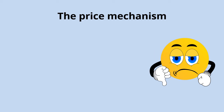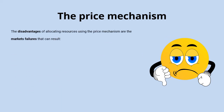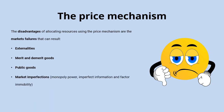There are a number of problems or disadvantages with allocating resources through the price mechanism. We've got externalities — external costs or benefits which can cause under- or over-production and consumption. We've got merit and demerit goods, consumed at too low or too high a level respectively. We've got public goods, which the market will fail to provide because of the free rider problem. We've got market imperfections such as monopoly power, imperfect information, and factor immobility. And we've got inequality — markets can very often lead to a highly unequal allocation of resources.